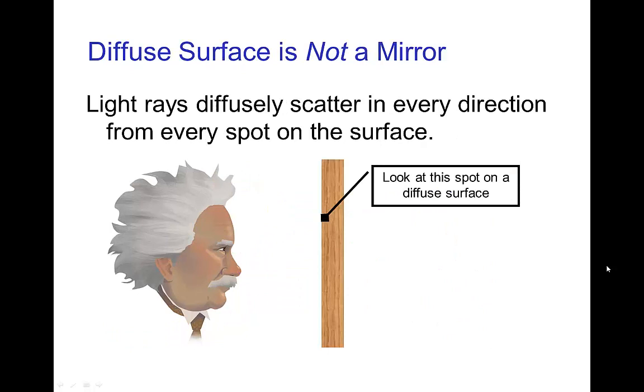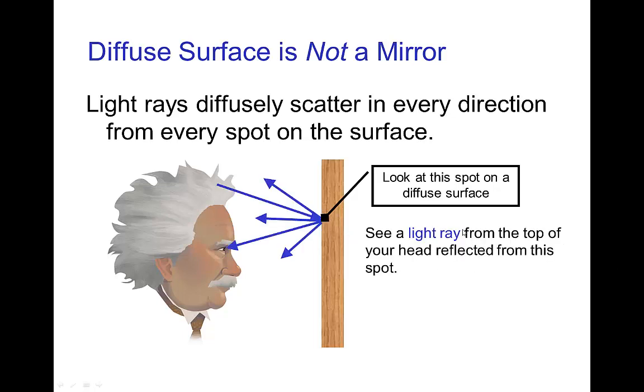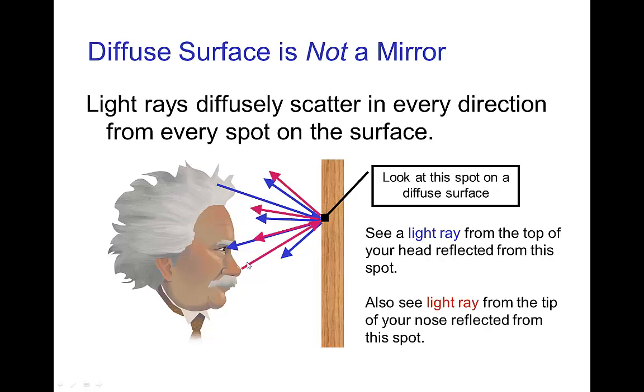Now this also explains to us why a diffuse surface does not form a mirror reflection because if you are looking at that spot on the surface, you see some light rays. You see a light ray which comes from the top of your head because light from the top of your head striking that spot is scattered in all directions. But light coming from your nose striking that spot, some of that light also enters your eye. So you see a blend of light coming from the top of your head, from your nose, from your forehead, from every part of your face and so that mixture, you don't resolve any particular image on a diffuse surface.